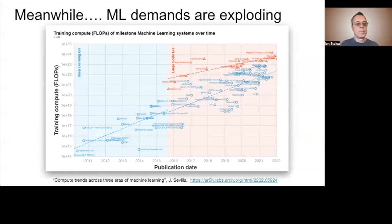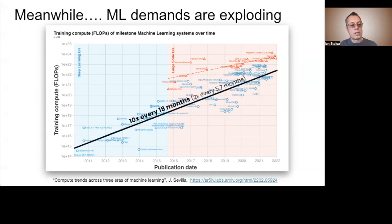In the meanwhile, the compute demands of machine learning have exploded. Here is a plot showing the compute demands required to train machine learning models over the past 12 years, from a study published earlier this year. According to this study, the compute demands to train machine learning models has doubled every 5.7 months over the past 12 years. This is equivalent to the compute demands growing about 10 times every 18 months.